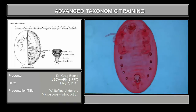To give you an example, this is a puparium. Unlike most insects, the identification of white flies is based on the immature form. This is the fourth stage instar, nymphal stage, also called the puparium.